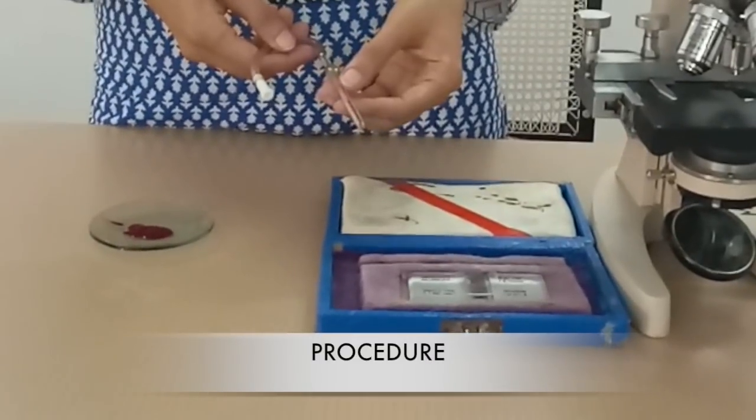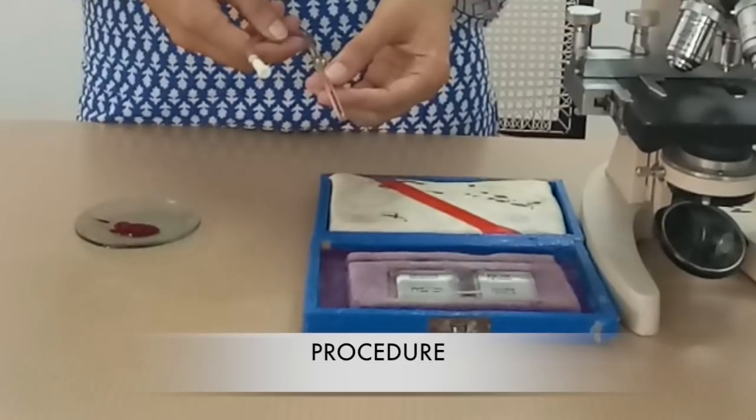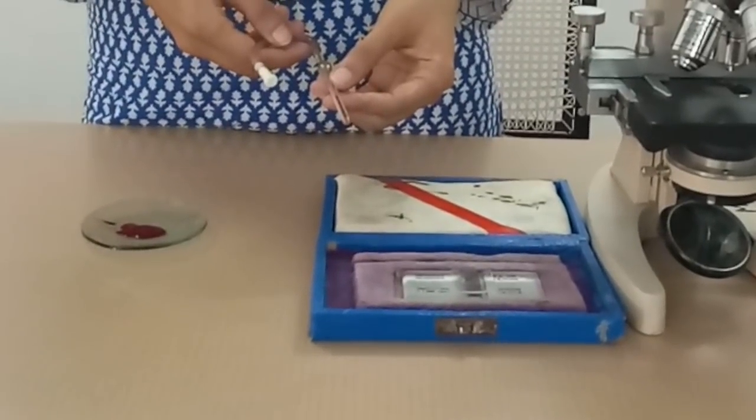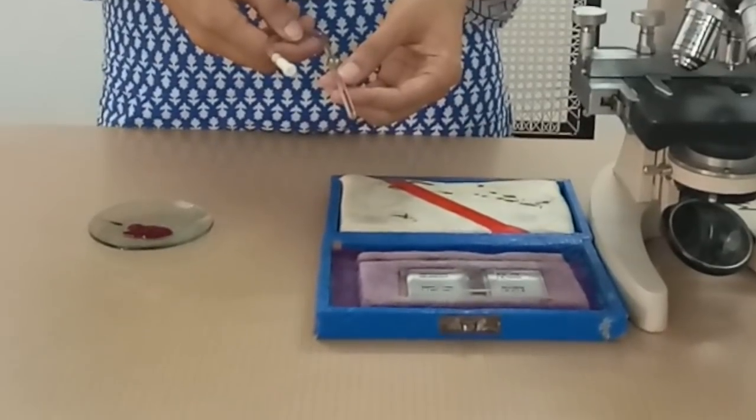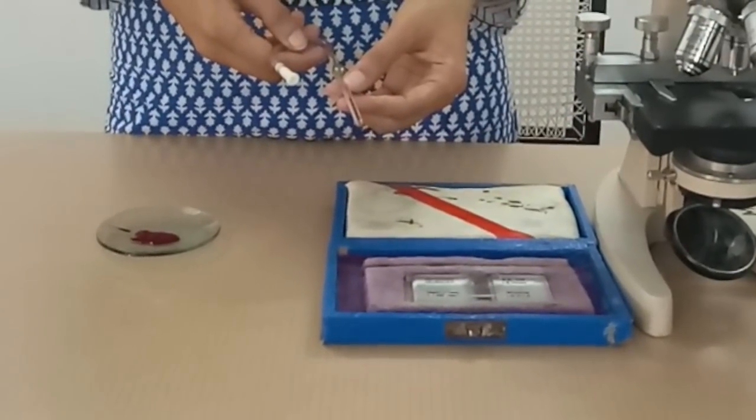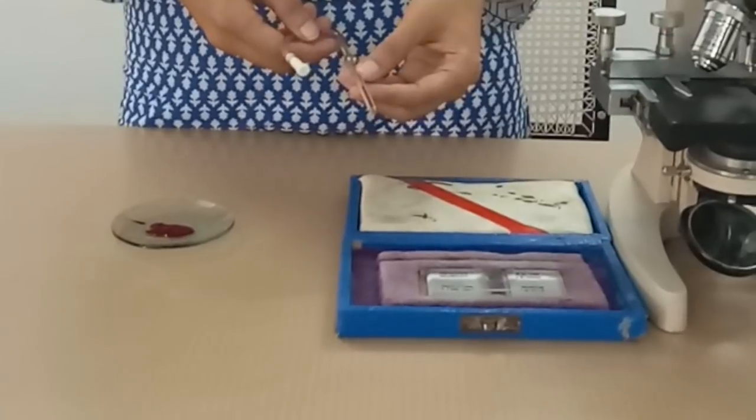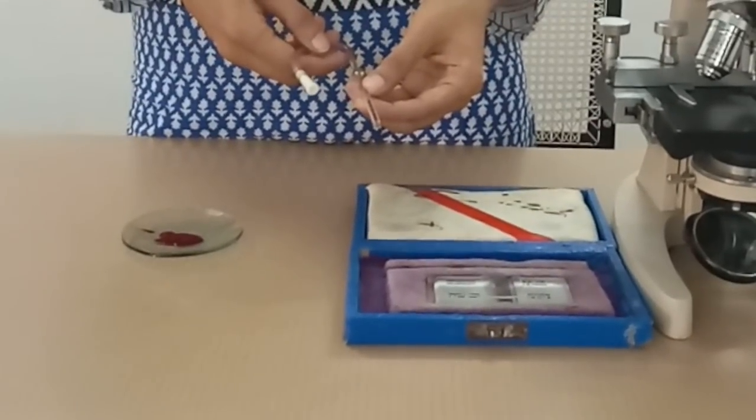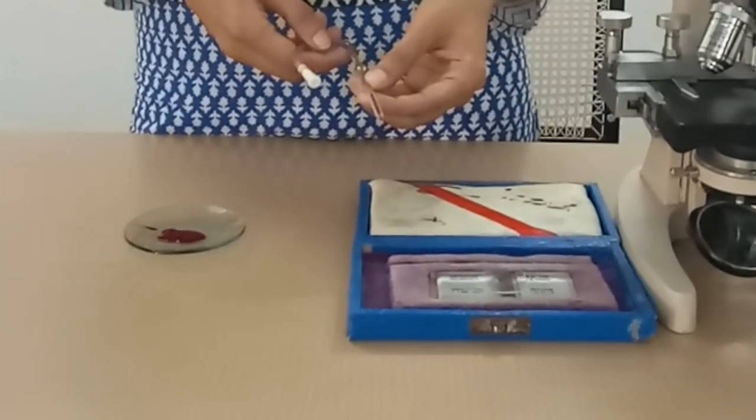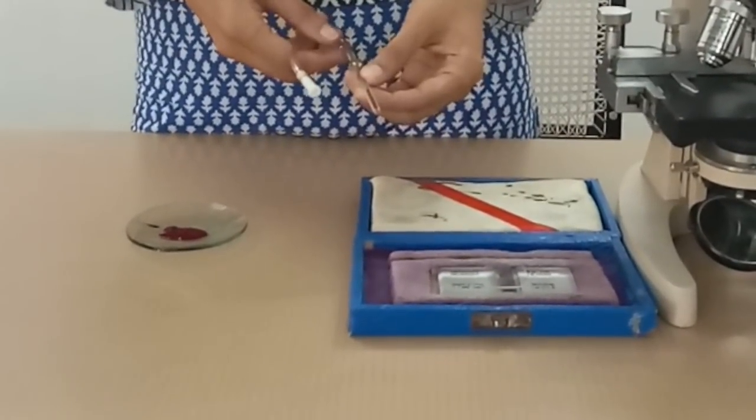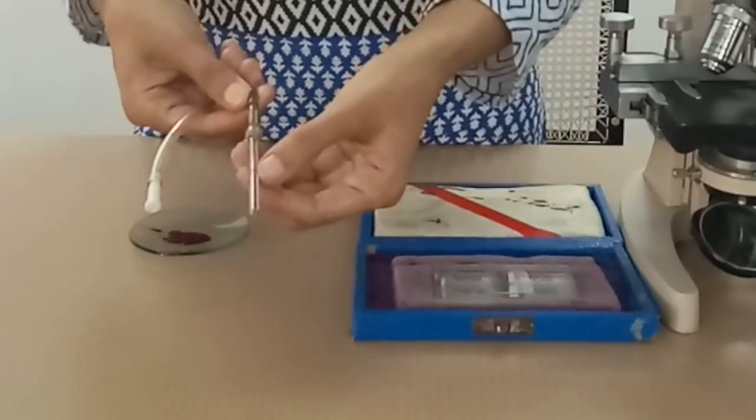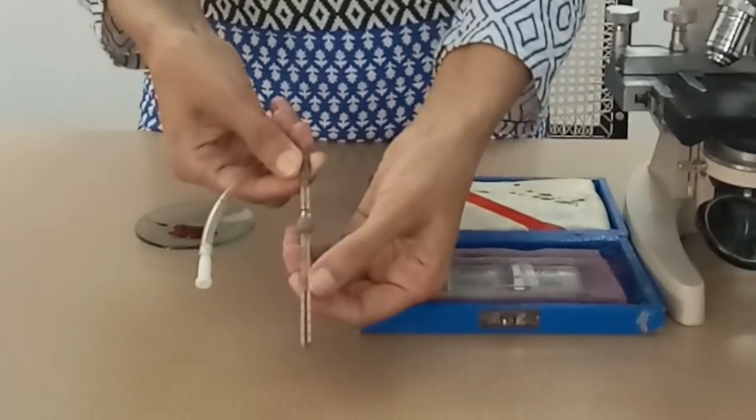Procedure: with all antiseptic precautions, get a finger prick, discard first two drops of blood and let a good size drop to form. Here we are using collected sample of blood. Now dip the tip of the WBC pipette in the edge of the drop and draw the blood to the 0.5 mark. You can see here we have drawn the blood up to 0.5 mark.